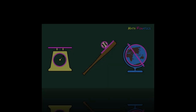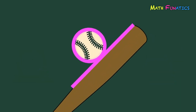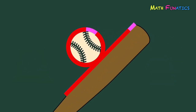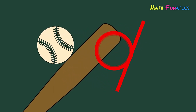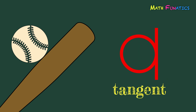Let's analyze the baseball and the baseball bat. In this figure, the baseball, which is circular in shape, is touching the straight edge of the bat at a certain point. This case, when a line and a circle meet, is called tangent. The straight line and the circle have one common point or point of intersection, and this point of intersection of the tangent line with the circle is called the point of tangency.